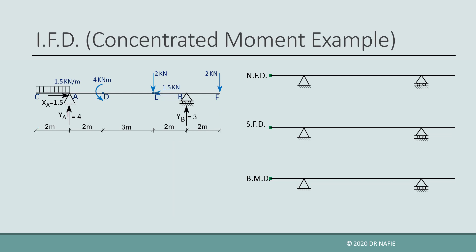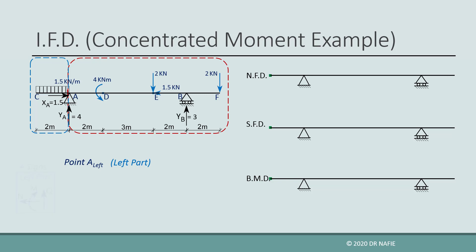We evaluate the internal forces at the next critical point, just to the left of the support at point A. We will divide the beam at that point and use the left part. We convert the distributed load to an equivalent concentrated force: 1.5 kN/m multiplied by 2 meters gives 3 kN, located 1 meter from point A. The normal force equals the sum of all horizontal forces in the left part, which contains none, so the normal force is zero.